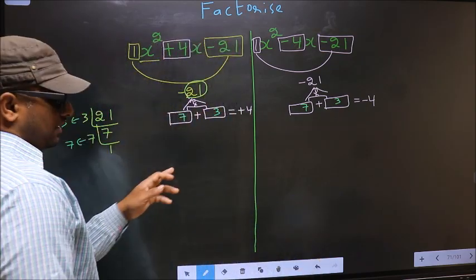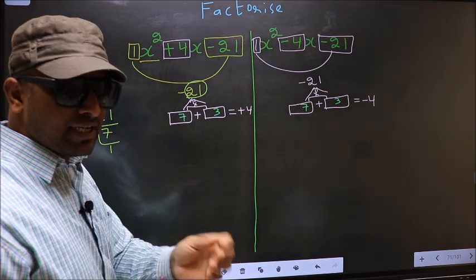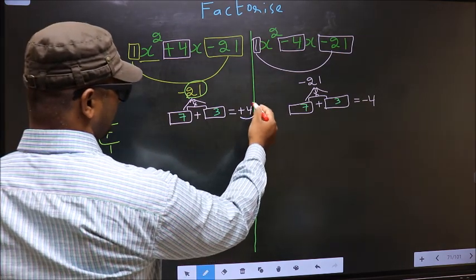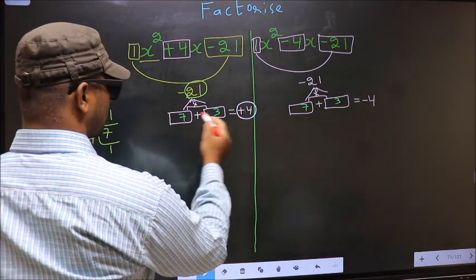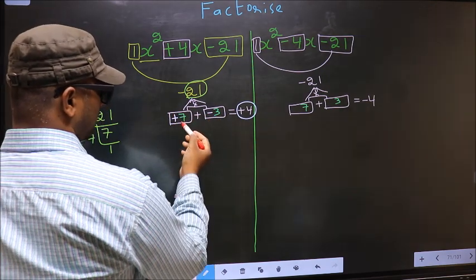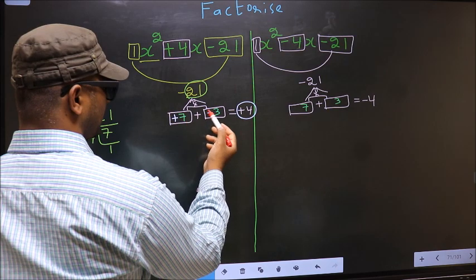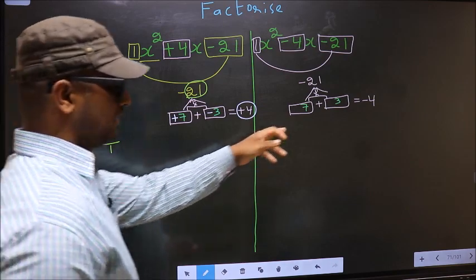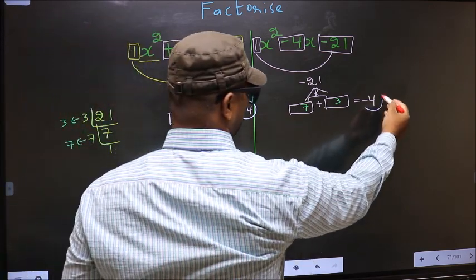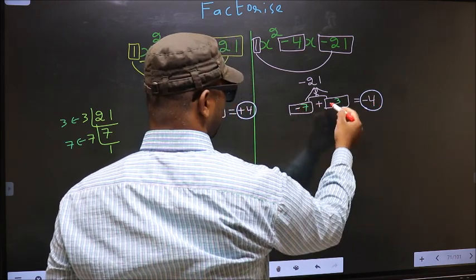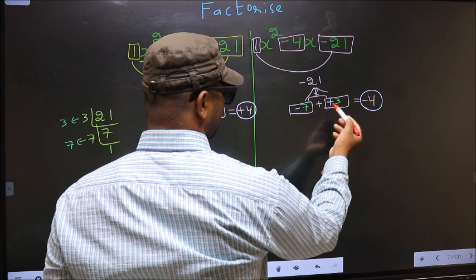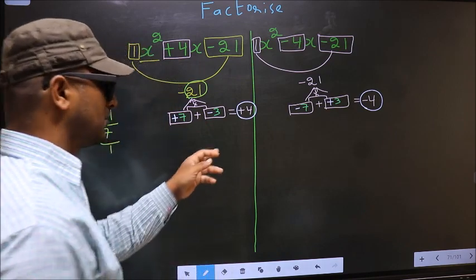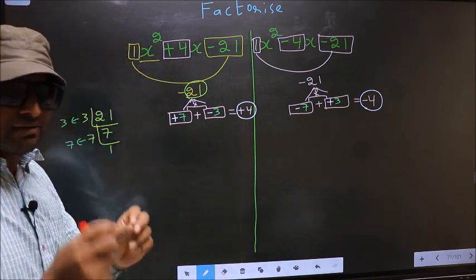Now the difference between these two comes while adjusting the signs. Over here we have +4. To get +4, we put +7 and -3: +7 + (-3) = +4, and +7 × (-3) = -21. Now here we need to get -4. To get -4, we place -7 and +3: -7 + 3 = -4, and -7 × 3 = -21. So the difference arises when we adjust the signs.